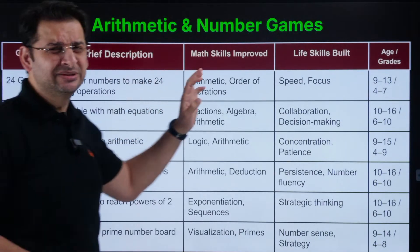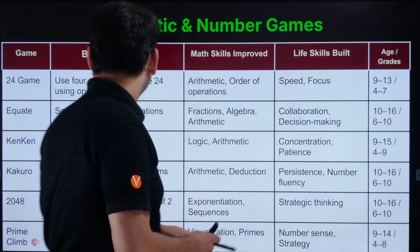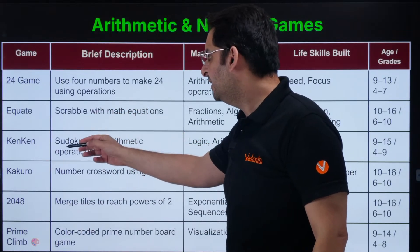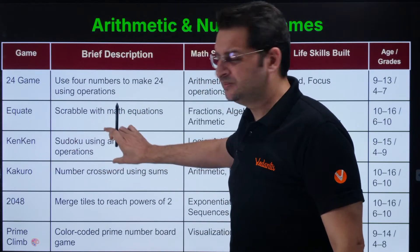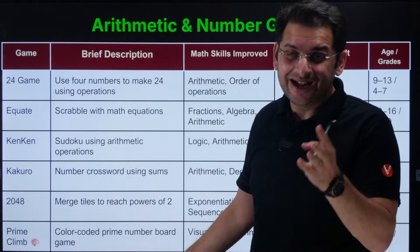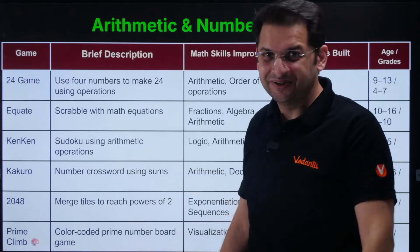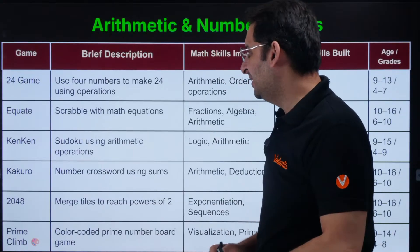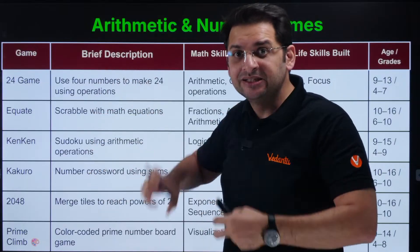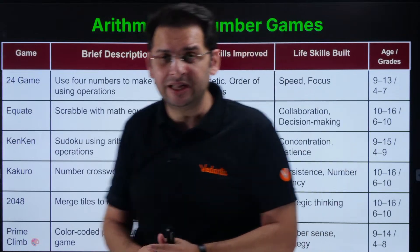Then there are arithmetic and number games — this is what we do when kids are in third, fourth, fifth grade. One is the 24 game. Then there is Equate. Then KenKen — KenKen and Kakuro are related, and Kakuro and Sudoku are similar things. Then there is 2048, which is a very addictive game. And then there is Prime Club. A lot of static puzzles from these are brought to students so they are able to think.